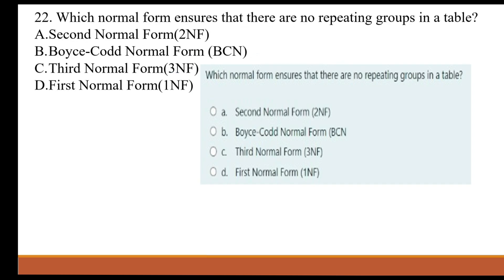Which normal form ensures that there are no repeating groups in a table? A. Second Normal Form. B. Boyce-Codd Normal Form. C. Third Normal Form. D. First Normal Form.